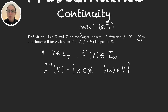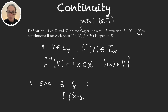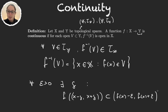Here f⁻¹ is not necessarily the inverse; if the function admits an inverse then the pre-image will be the same as the inverse, but otherwise the pre-image is defined as the set of all x in the domain such that f(x) is an element of B. This is actually the same as the definition on the real line, where for every epsilon there exists delta such that the interval (x−δ, x+δ) maps into (f(x)−ε, f(x)+ε). This new definition is more general and works for any two topological spaces.